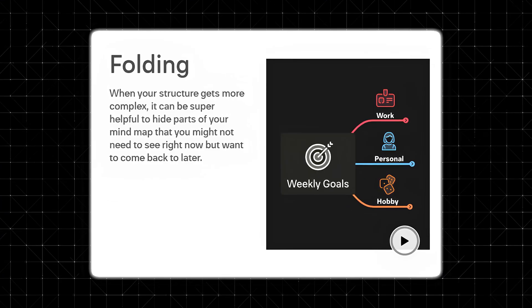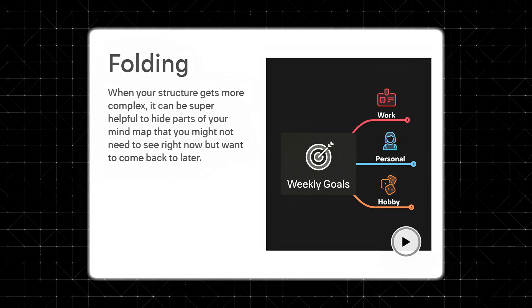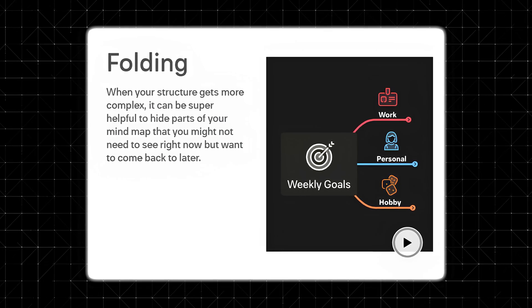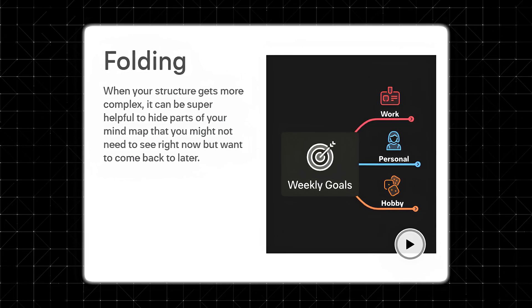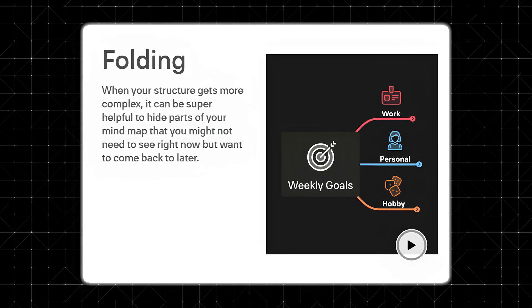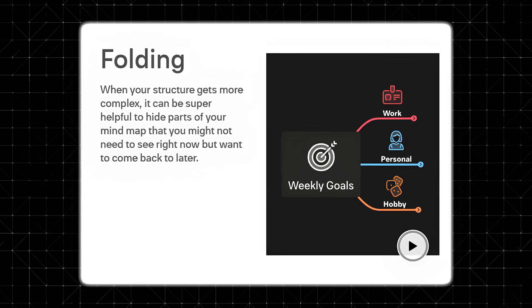Folding and focus mode. When your mind map starts to grow — and trust me, it will — things can get a little chaotic. That's where folding comes in. Folding allows you to collapse parts of your map, hiding details that you don't need to focus on right now.